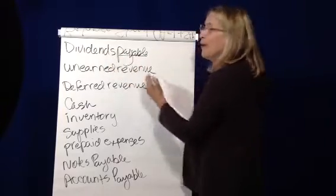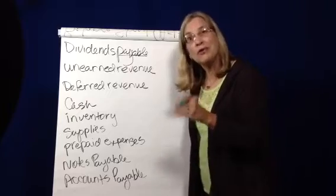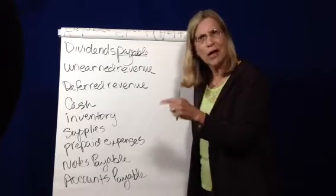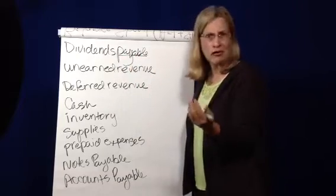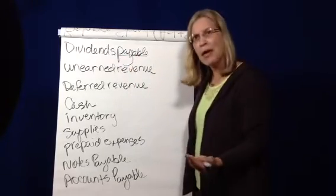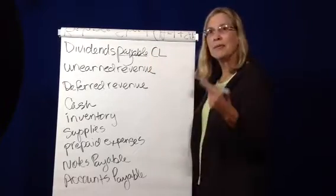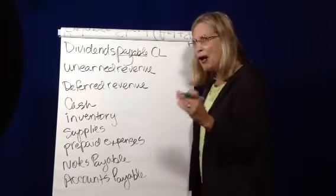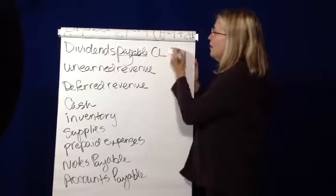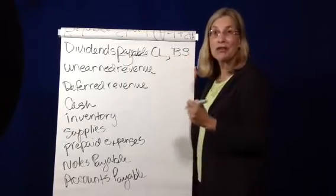Now here's the tip-off: payable means it's a liability. It can be one of two kinds of liabilities, right? Current liability or long-term. Usually when you declare a dividend, the stockholders say, where's my money? And you have to pay it pretty quickly. So it's going to be called a current liability. Now, current liabilities and all liabilities show up on the balance sheet, don't they? So it's a current liability, it's on the balance sheet.